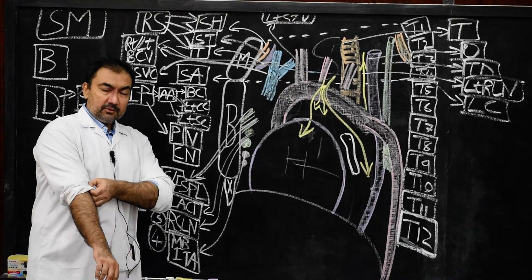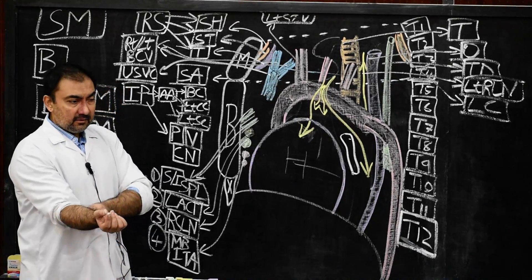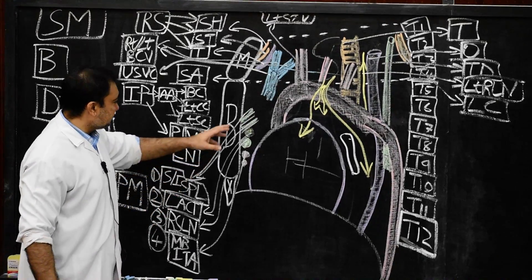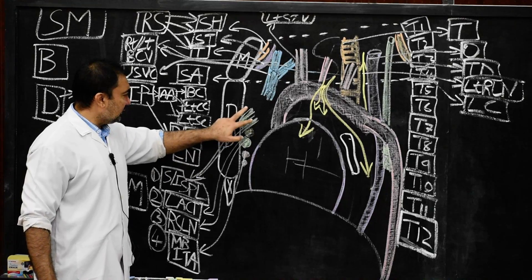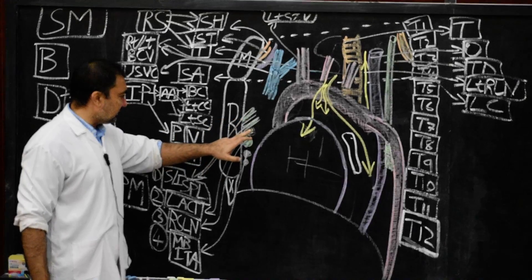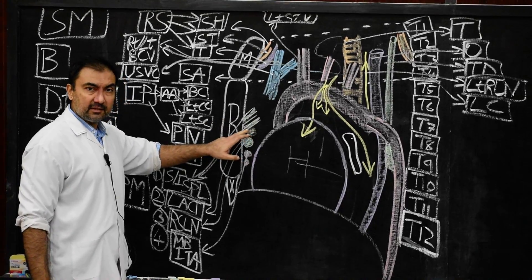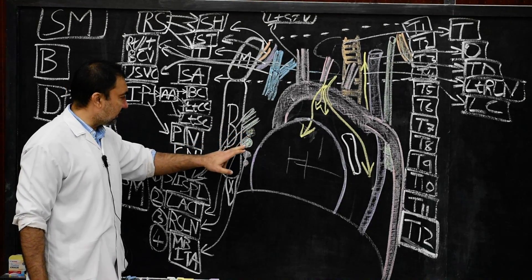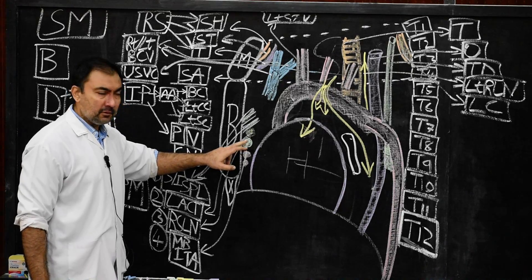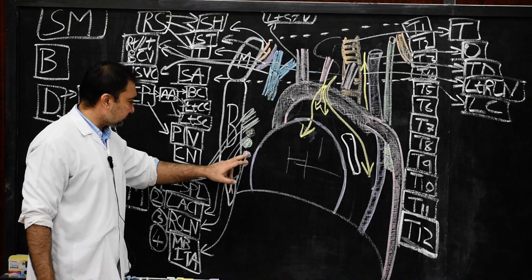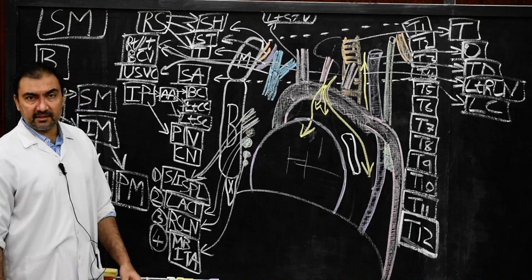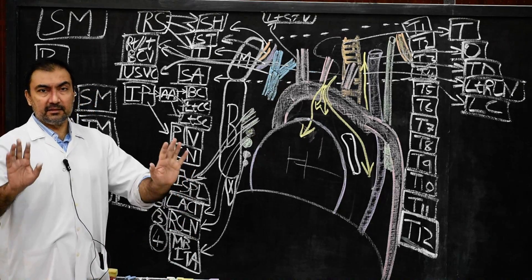Please note down, because they may be asked in MCQs: superior and inferior sternopericardial ligaments, then loose areolar connective tissue, then the retrosternal lymph node, and mediastinal branches of internal thoracic artery.